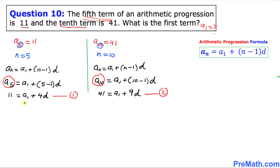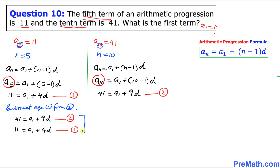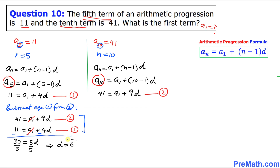We subtract Equation 1 from Equation 2 to find d. Changing the signs of Equation 1: negative 11, negative a1, negative 4d. The a1 terms cancel. We get 41 minus 11 equals 30, and 9d minus 4d equals 5d, so 30 equals 5d. Dividing both sides by 5, d equals 6.